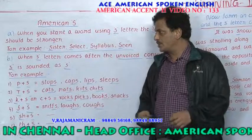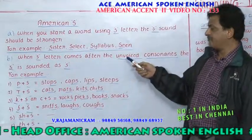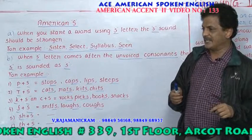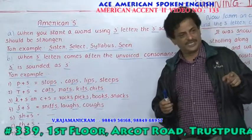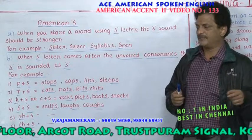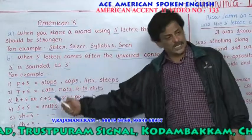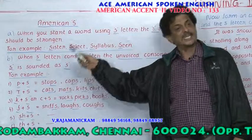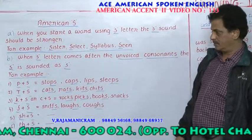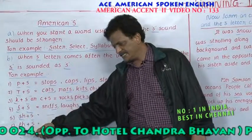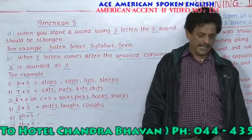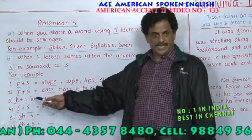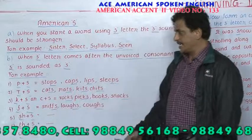When S comes after a voiced consonant, S is changed: after B, S becomes Z; after M, S becomes NZ; after R, S becomes RZ; after L, S becomes LZ. But after unvoiced consonants, S stays as S. What are the unvoiced consonants? P, T, K, F, S, H, TH, CH.